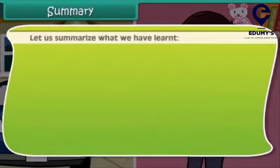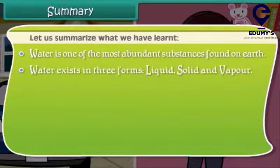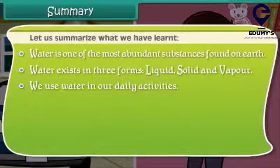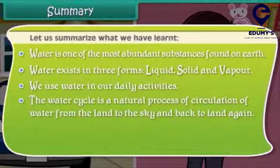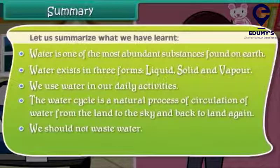Let's summarize what we have learned so far. Water is one of the most abundant substances found on Earth. Water exists in three forms: liquid, solid, and vapor. We use water in our daily activities. The water cycle is a natural process of circulation of water from the land to the sky and back to land again. We should not waste water.